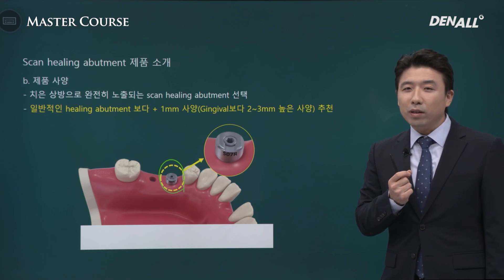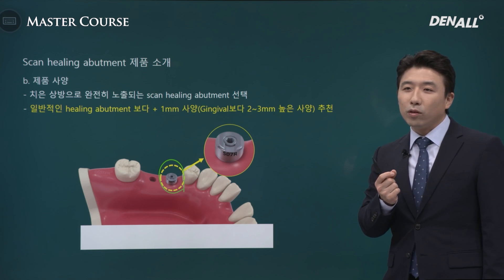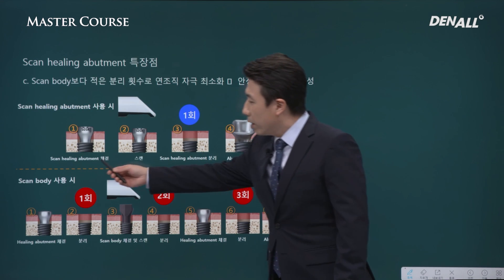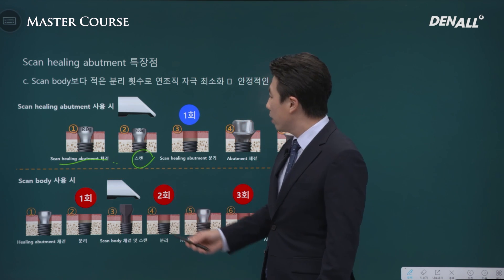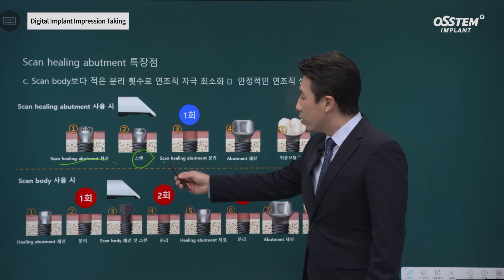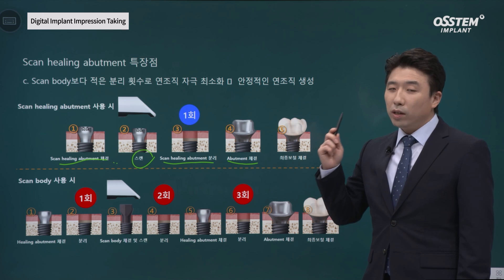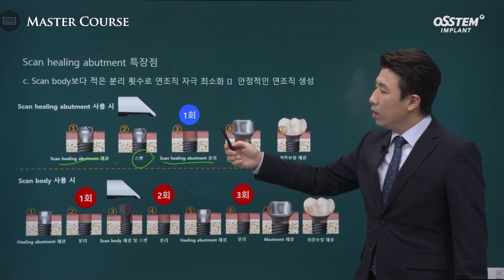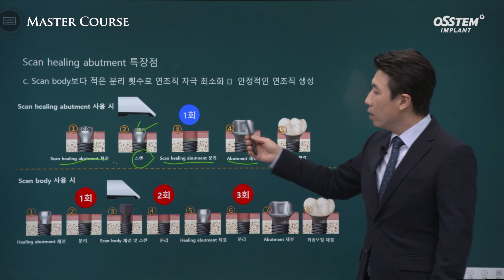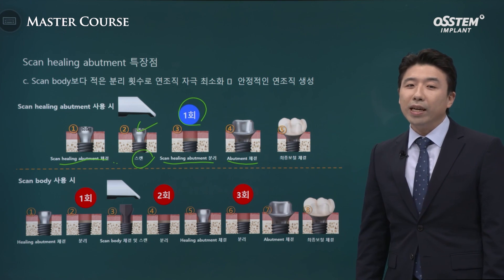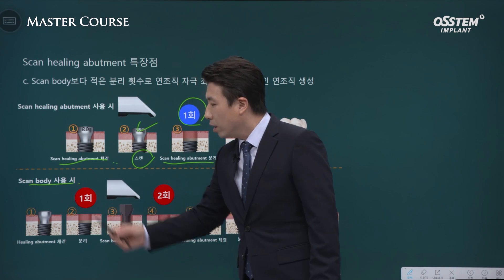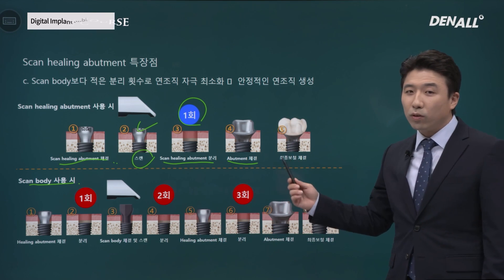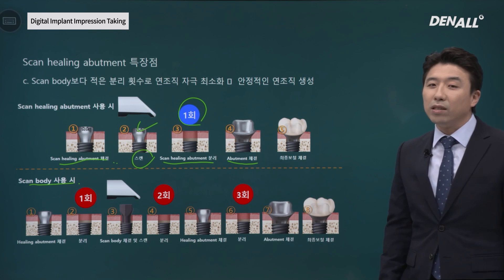This may look trivial, but clinically this can reduce chair time, making it convenient for both patients and clinicians. With the scan healing abutment connected, it is scanned directly. It only needs to be removed when the final abutment and crown are delivered — so it is removed just once during delivery, which is a great advantage. When using a traditional scan body, the healing abutment must be removed, the scan body connected, then the healing abutment reconnected again — so removal happens quite frequently.